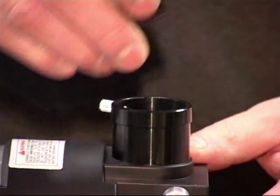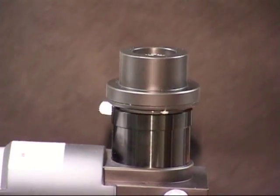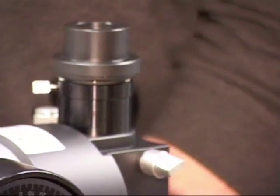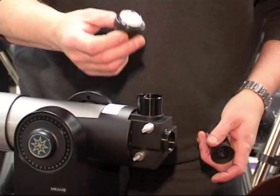Then simply flip the AlignMate over to reveal the magnetic compass and in seconds you can point the telescope north ready to go to the first alignment star.